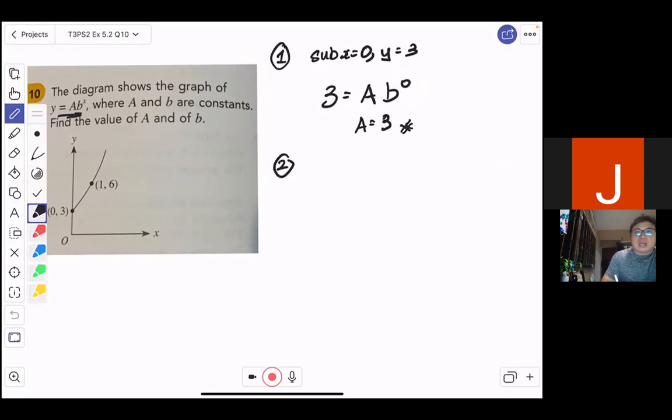The second step is that this equation also lies on 1, 6. So if I substitute x equals 1 and y equals 6, and again, y equals a, now my a is 3.